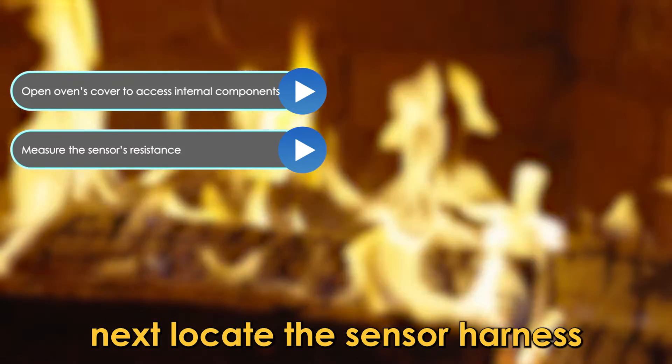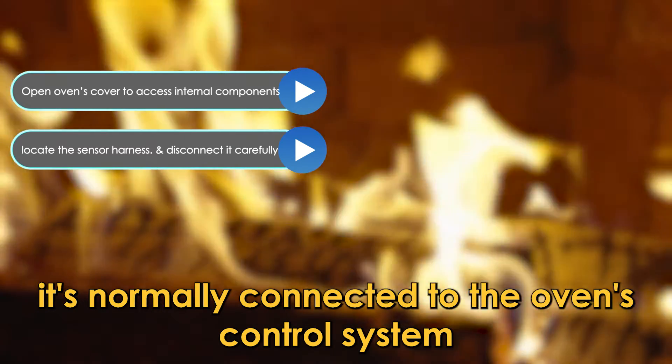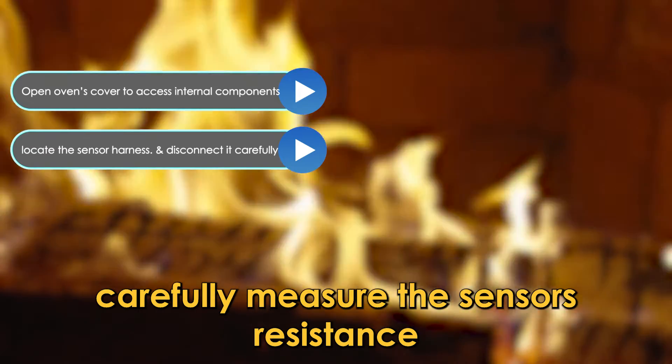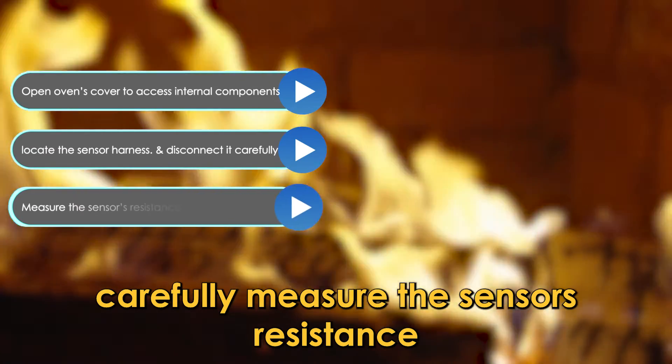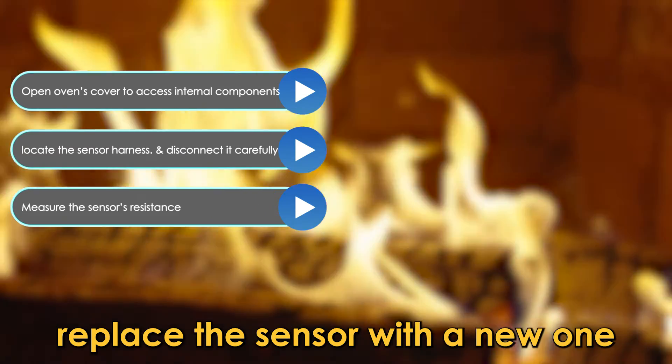Next, locate the sensor harness. It's normally connected to the oven's control system. Once you've located it, disconnect it carefully. Measure the sensor's resistance. And if you notice any irregularities, replace the sensor with a new one.